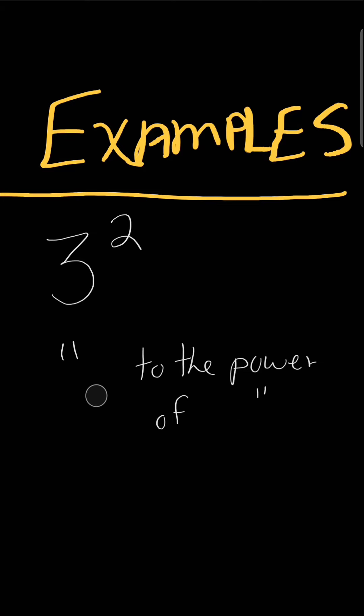Alright, so what does this expression tell us? 3 to the second power. Well, by definition, this is saying that the number 3 is multiplied times itself 2 times. Alright, so 3 times 3, and 3 times 3 is 9.